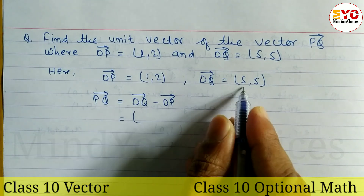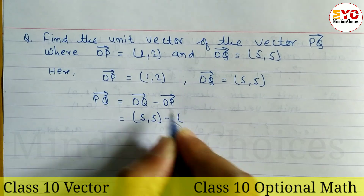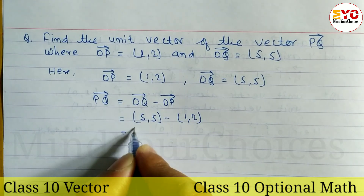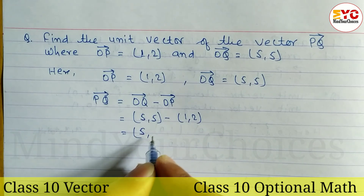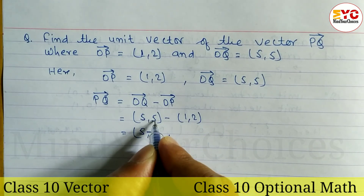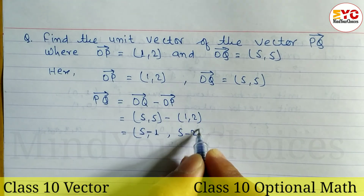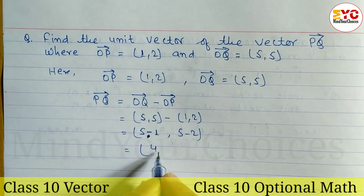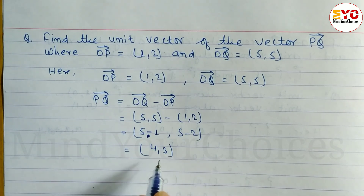OQ is equal to (5, 5), so write down 5, 5. Minus OP which is equal to (1, 2), so write 1, 2. Now calculate: X coordinate subtract 5 minus 1, Y coordinate subtract 5 minus 2. When you subtract we get PQ equal to (4, 3).